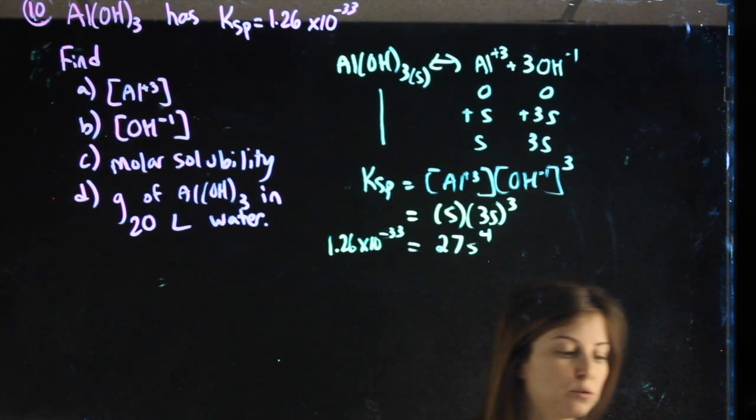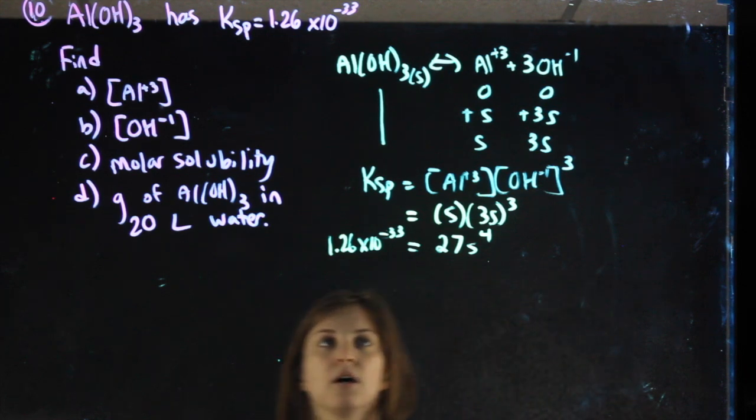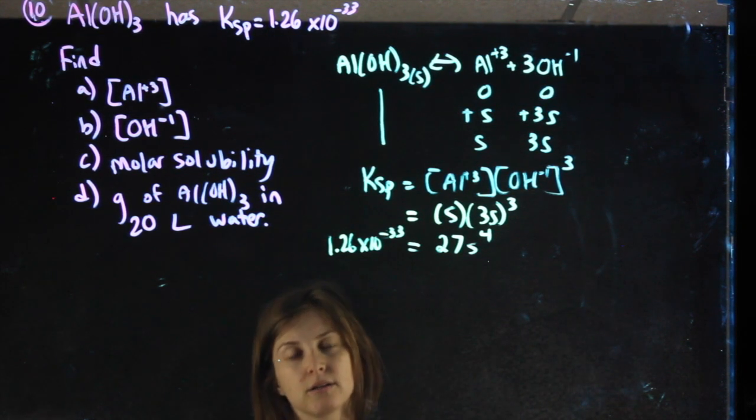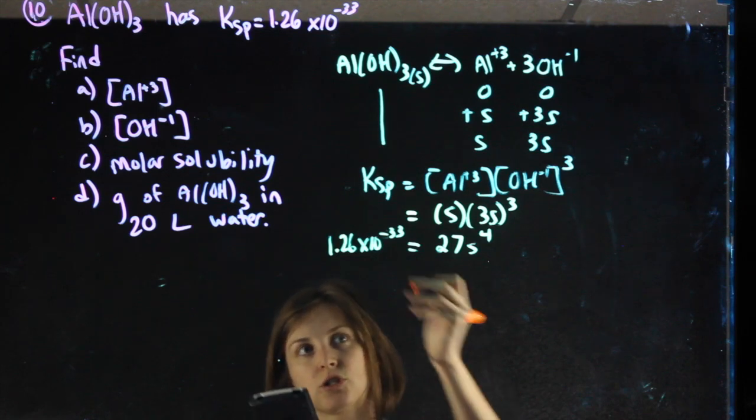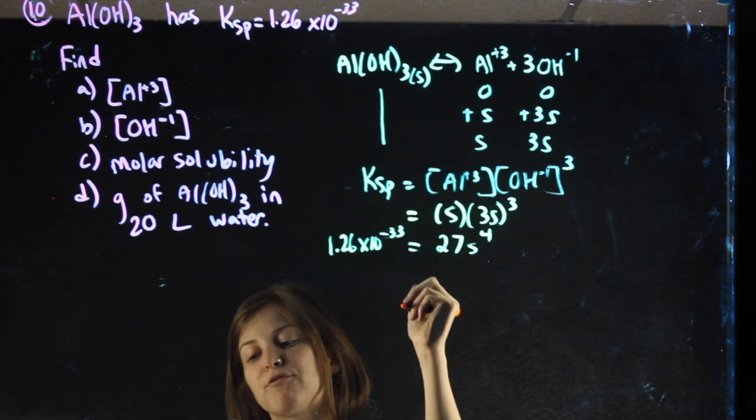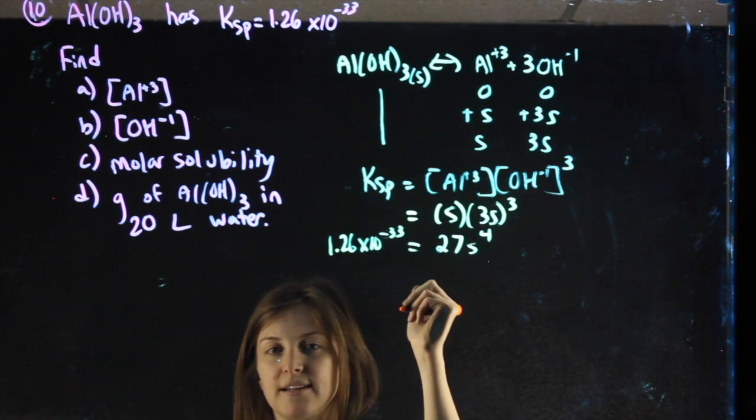Then, in order to find S, I'm going to make sure I type this number in. I use the big E button on my calculator. Divide it by 27 first. When you divide by 27, you should get 4.7 times 10 to the negative 35.